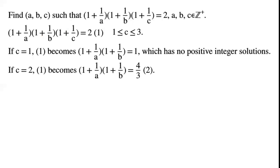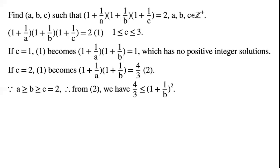If c = 2, equation 1 becomes (1 + 1/a)(1 + 1/b) = 4/3. Because a ≥ b ≥ c = 2, from equation 2, we have 4/3 ≤ (1 + 1/b)².